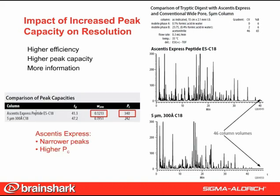While visual inspection suggests a greater number of resolved peaks on the Ascentus Express column, a more convincing quantitative evaluation comes from a sampling of peaks across the chromatogram as shown in the table. Ascentus Express Peptide ESC18 is able to resolve statistically a greater number of peaks. Over approximately the same gradient time, an Ascentus Express column, based on the fused core particle design, provides much narrower peaks and 1.4 times the peak capacity than the conventional 5 micron wide pore C18 particle.